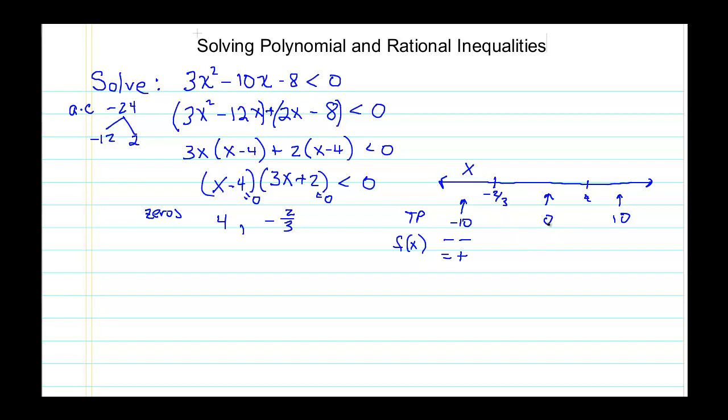Let's try the same thing with 0. If I put 0 into (x - 4), I get negative. If I put 0 in here, I get positive. Negative times positive equals negative, which is less than 0. So this part of the interval is good. Finally, if I put +10 in, 10 - 4 is positive, 30 + 2 is positive. Positive times positive is positive. So this is not less than 0. So my solution is this interval between -2/3 and 4. If we write that as interval notation, our answer would be the open interval (-2/3, 4).